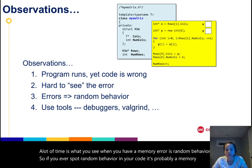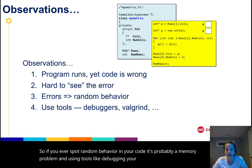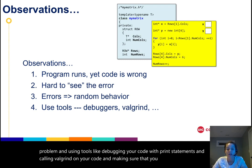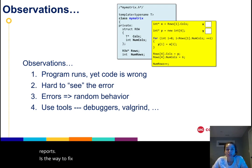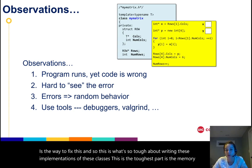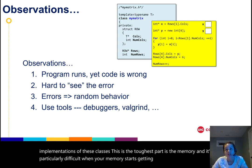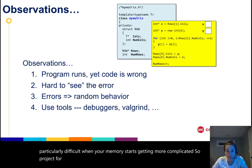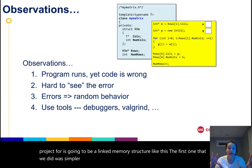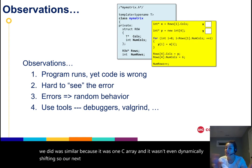And using tools like debugging your code with print statements and calling valgrind on your code and making sure that you have clean valgrind reports is the way to fix this. And so this is what's so tough about writing these implementations of these classes. This is the toughest part: the memory. And it's particularly difficult when your memory starts getting more complicated. So project four is going to be a linked memory structure like this. The first one that we did was simpler because it was one C array and it wasn't even dynamically shifting. So our next one is going to start linking memory together.